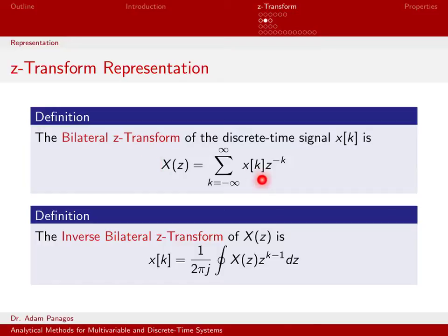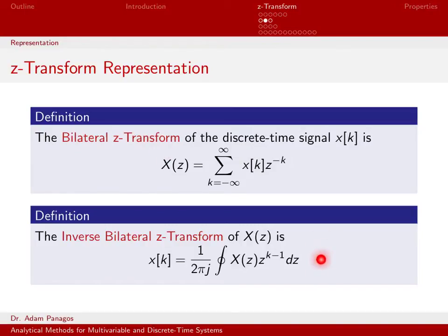That previous work was basically what told us how to define the z-transform. Notice this is called the bilateral z-transform, which sums from time minus infinity to infinity. We'll talk about something later called the unilateral z-transform that starts at time 0 and goes to infinity. But typically if we say z-transform, what we mean is this bilateral z-transform quantity. This equation is how we go from the z-domain back to the time domain. If you give me x of z, theoretically I can plug into this integral right here and get out x of k.